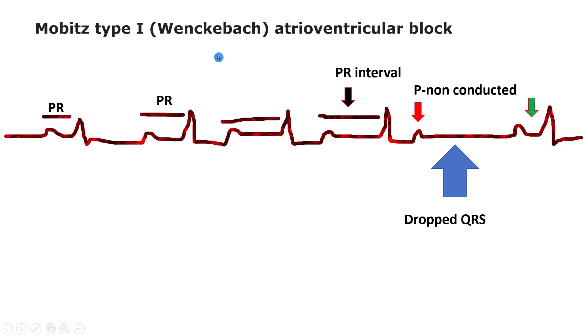With Mobitz type 1, the classic AV Wenckebach pattern, each stimulus from the atria encounters progressively more difficulty in traversing the AV node to the ventricles. The node becomes increasingly refractory. Finally, an atrial stimulus is not conducted at all such that the expected QRS complex is blocked. This cycle is followed by recovery of the AV node, and then the whole cycle starts again.